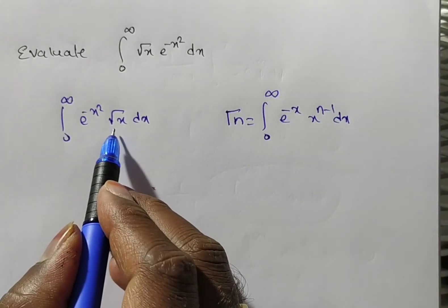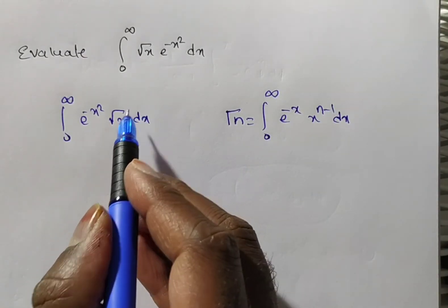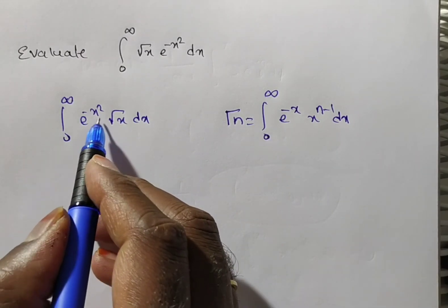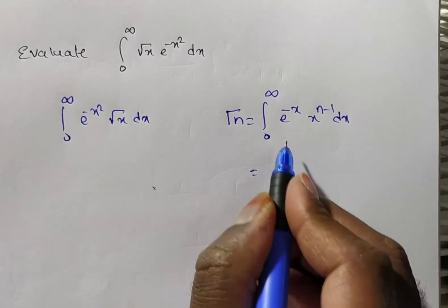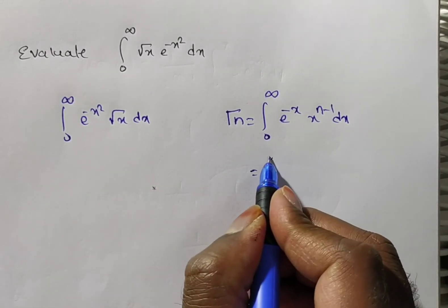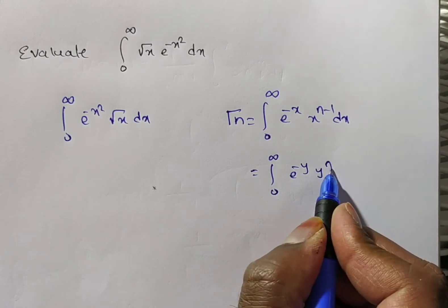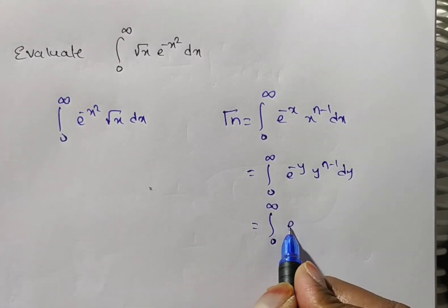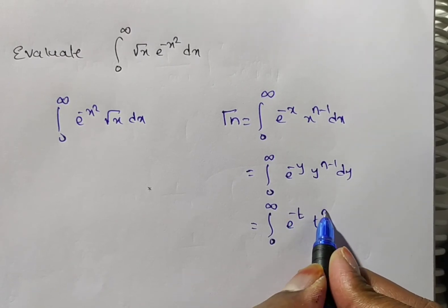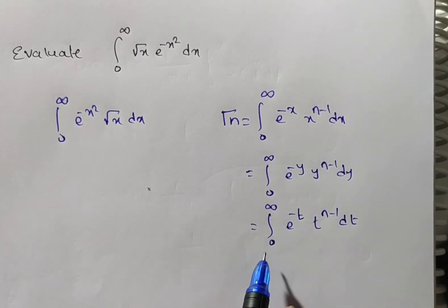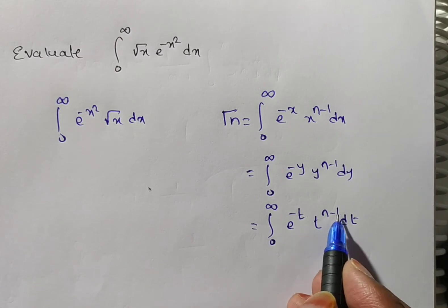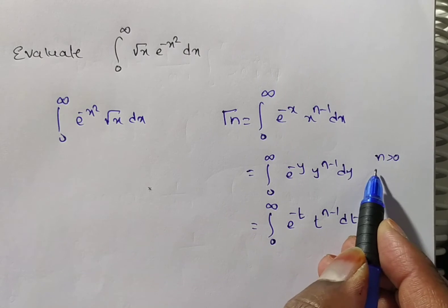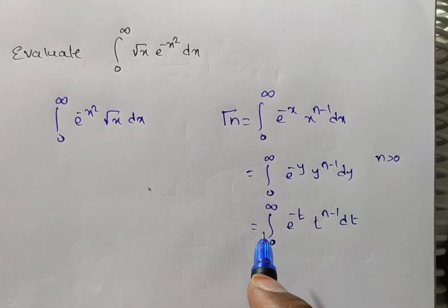See, root x can be written as x to the power 1 by 2, which means n minus 1 equals 1 by 2. But here we have e to the power of minus x squared, so we need to change it. You can also write gamma n as integral 0 to infinity of e to the power of minus y times y to the power n minus 1 dy, or in terms of t. Any of them will be gamma n only, where n is greater than 0. In this case only the integrand will be convergent.